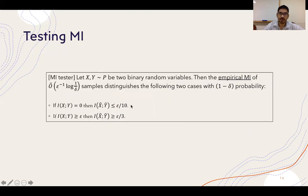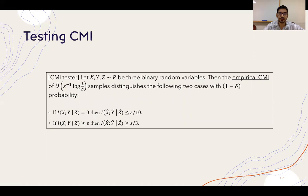More generally, we show the guarantee that whenever the true mutual information is 0, the empirical mutual information stays at most epsilon/10, and whenever it is at least epsilon, the empirical value stays at least epsilon/3. The extension to conditional mutual information conditioning on z follows from the mutual information tester together with an averaging argument, introducing a factor of the size of the sample space of z, while the guarantees remain the same.